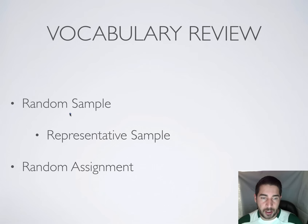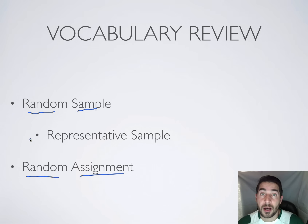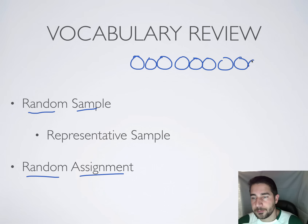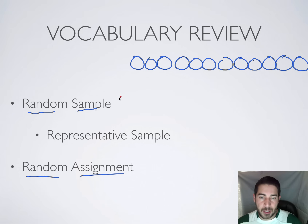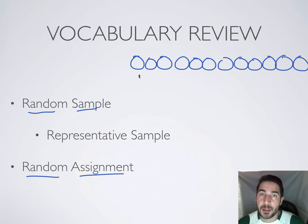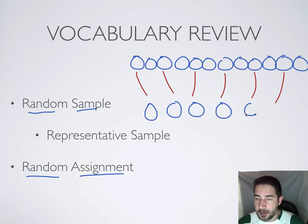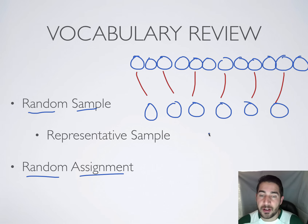The last two — and the most difficult terms of this section — are random sample and random assignment. These two terms often get confused. A random sample occurs when you select from a larger population without any special preference. For example, I might choose every second person that walks through the door, so I get this person, this person, this person — and so on. Those seven people randomly chosen make up my random sample. You also want them to be representative — if you're asking about high school kids, you want both boys and girls, roughly 50-50, to represent that group.